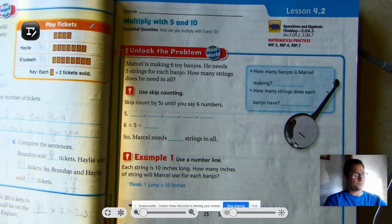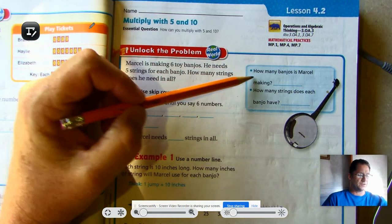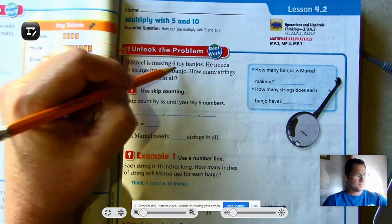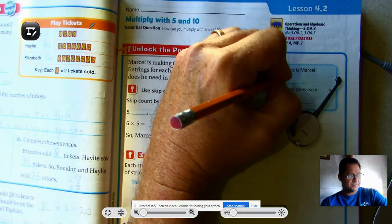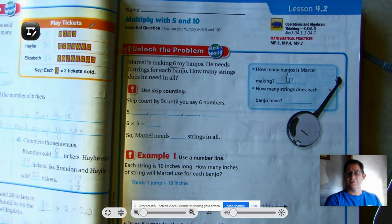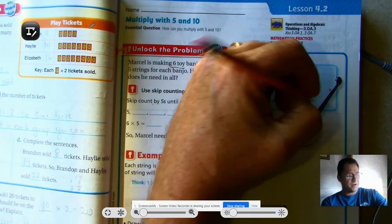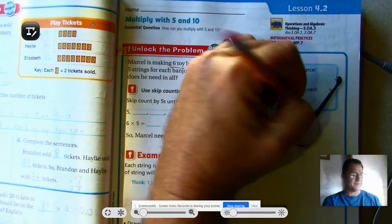Let's look at the little blue box that helps us break down a problem. How many banjos is Marcel making? He's making six toy banjos. So that's like the same, six groups. And how many strings does each banjo have? Each banjo has five strings.